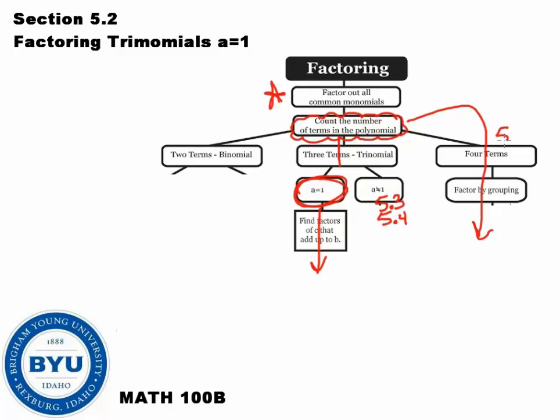This was section 5-1, and this part of the map is section 5-2, where you count the terms. If you have three terms, you use this method. Let's take a look at what they look like.